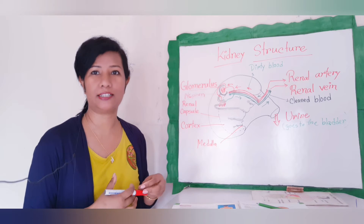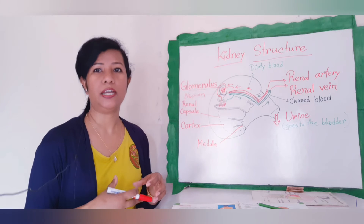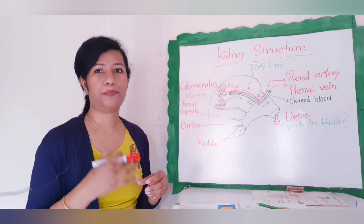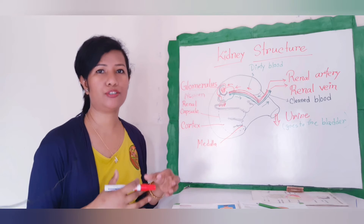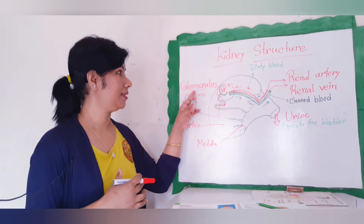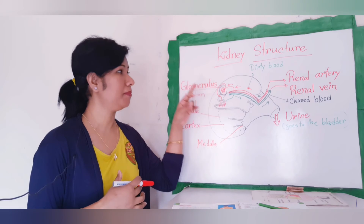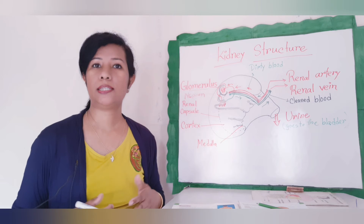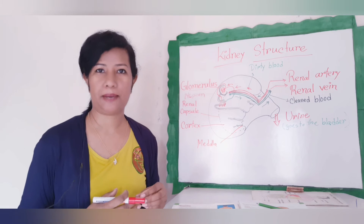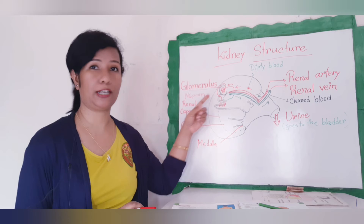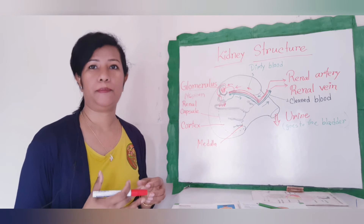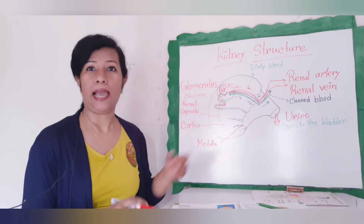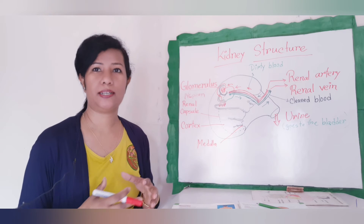Blood enters the kidney by the renal artery, which gives off numerous branches. Each branch breaks up into a mass of capillaries — this is the glomerulus. So the glomerulus is a mass of blood capillaries located in the renal capsule.